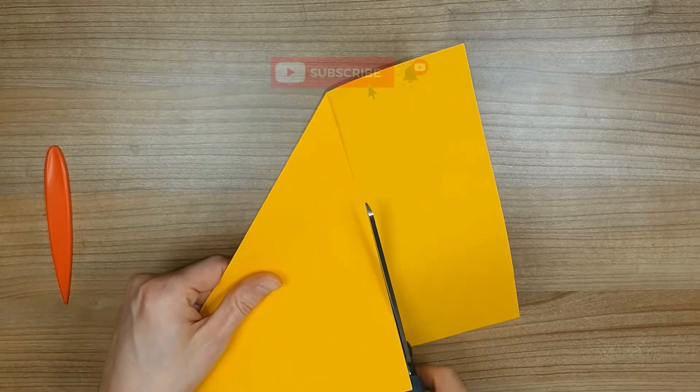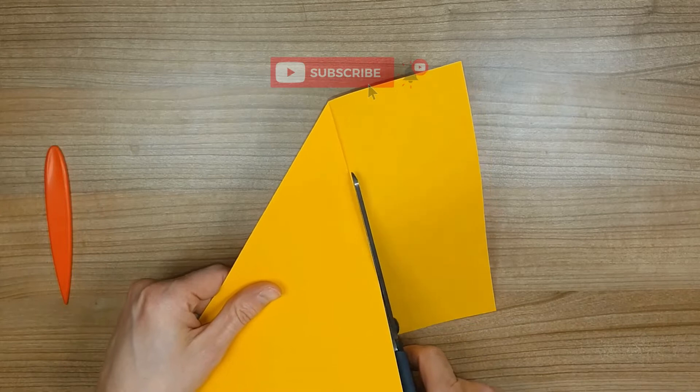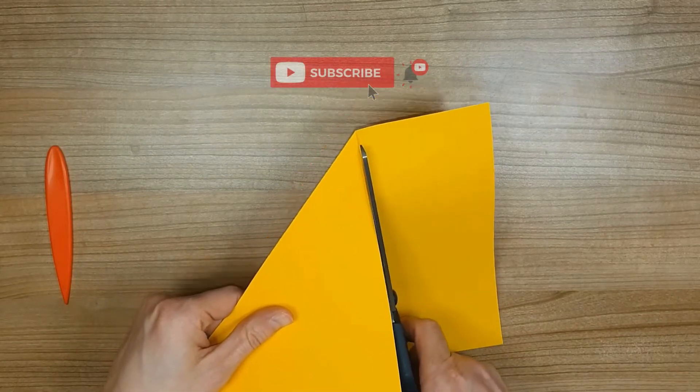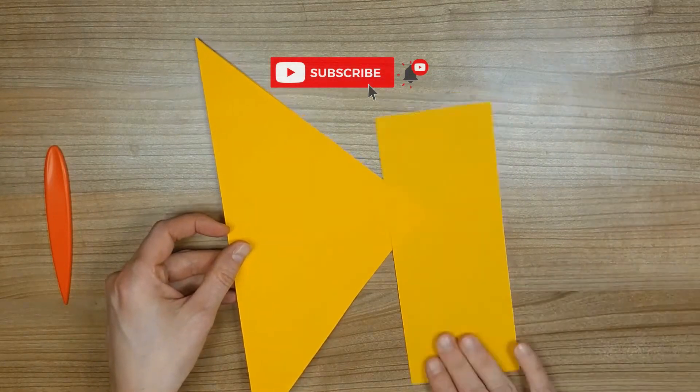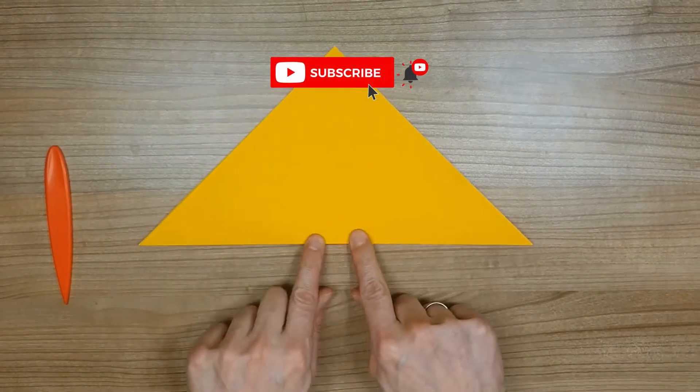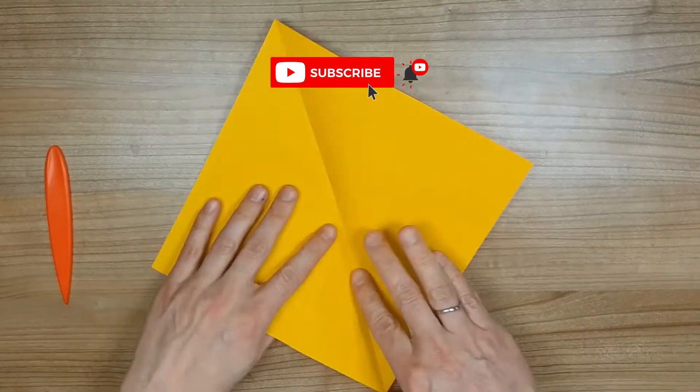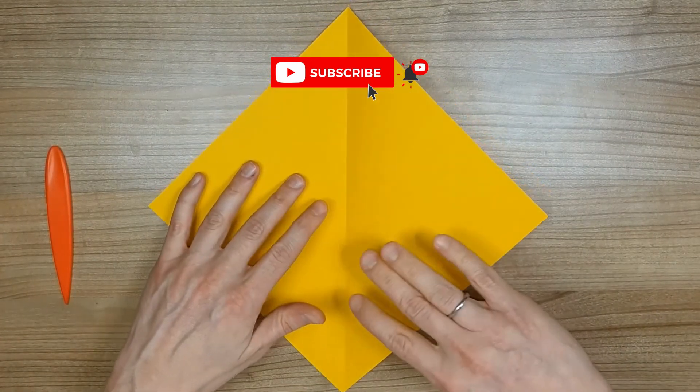If you start by making a square paper out of an A4 paper you already made the first diagonal crease. After that make another diagonal crease like this.